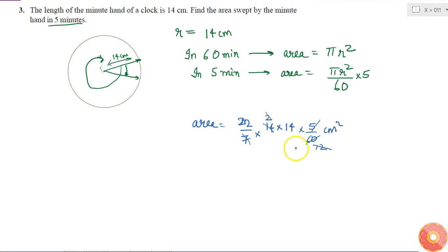And again, 14 is 2 times 7, and I'm left with 22 times 7 by 3 cm², which is the same as 22 times 7 is 154 divided by 3 cm². So this is the area swept by the minute hand in 5 minutes.